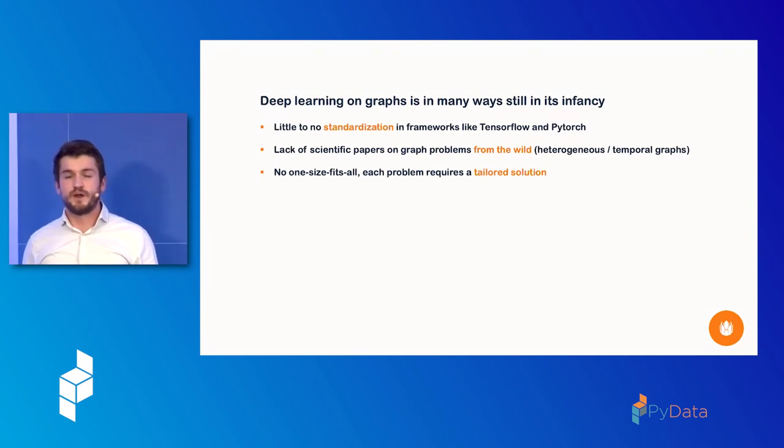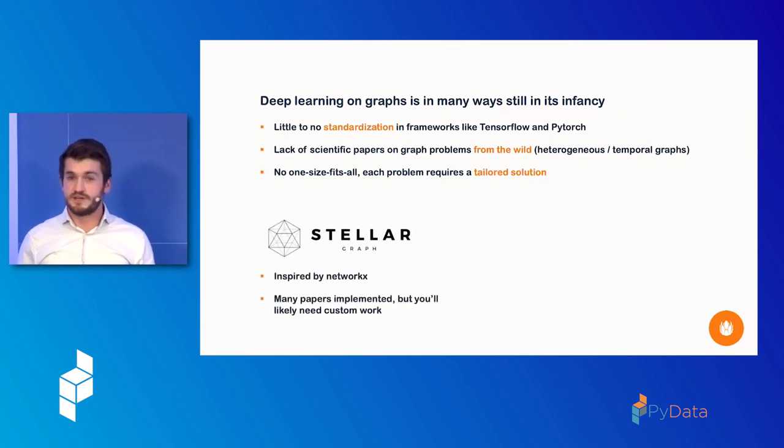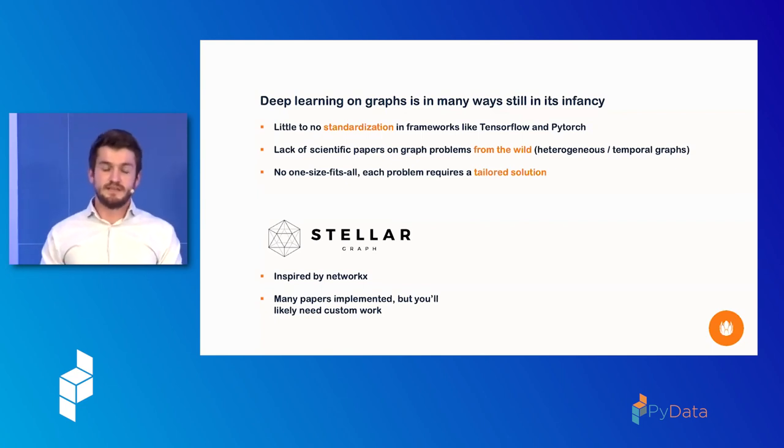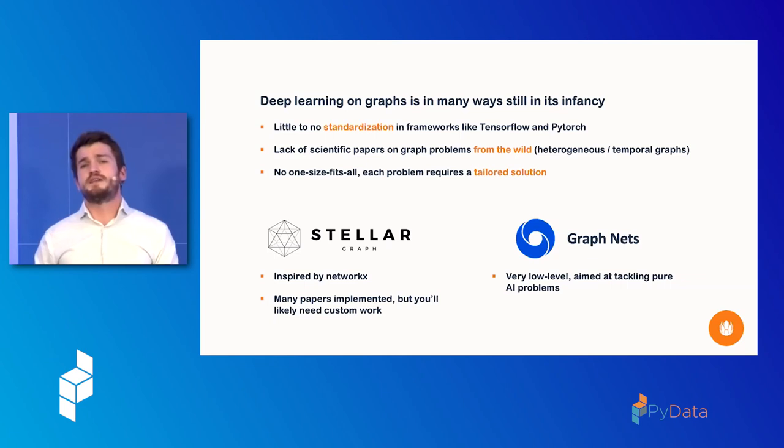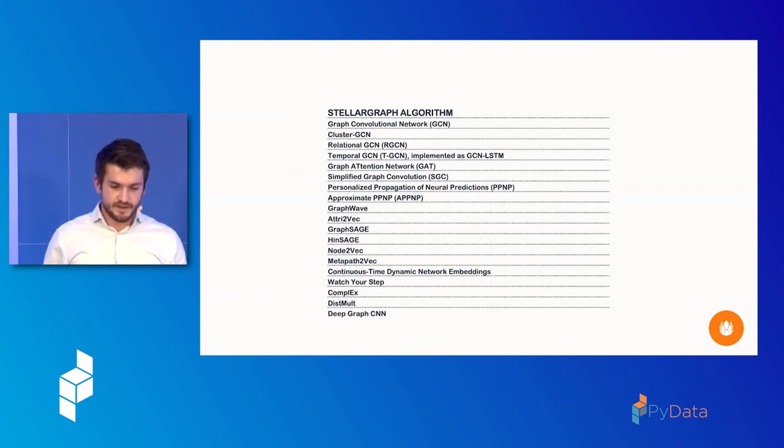So there's no one-size-fits-all solution. And that's a crucial thing. So it's very hard at this point to have a library that has just an API that sees what your graph problem is, and then arranges everything under the hood. You really have to think about that yourself. So there are some interesting projects on this Stellar Graph. There's also a company behind it, and they've taken the approach to implement lots of algorithms for lots of papers. And their backend is inspired by this NetworkX graph analytics library. And lastly, Google DeepMind is working on a project called GraphNets, but it's much more low level, and really also aimed at solving core AI questions.